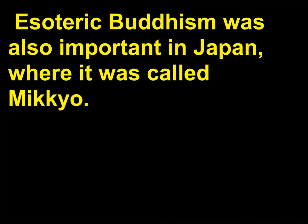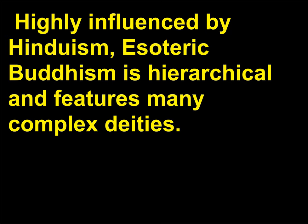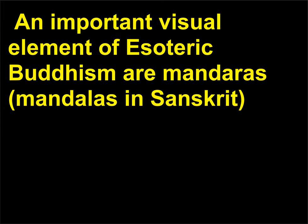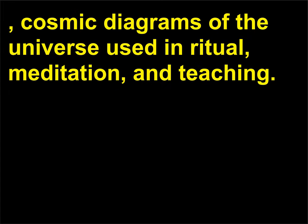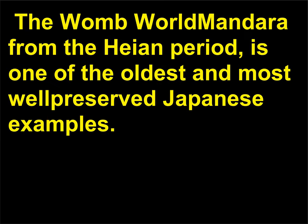Esoteric Buddhism was also important in Japan, where it was called Mikkyō. Highly influenced by Hinduism, Esoteric Buddhism is hierarchical and features many complex deities. An important visual element of Esoteric Buddhism are mandaras — mandalas in Sanskrit — cosmic diagrams of the universe used in ritual, meditation, and teaching. The Womb World Mandara from the Heian period is one of the oldest and most well-preserved Japanese examples.